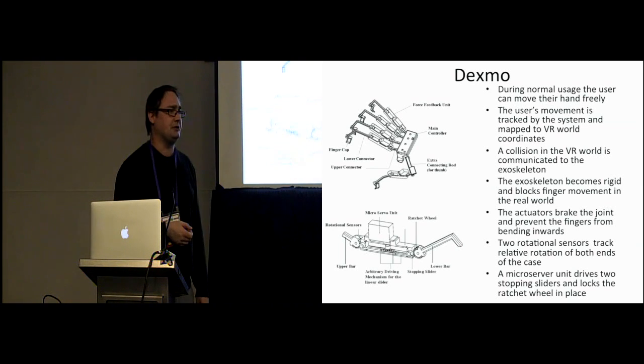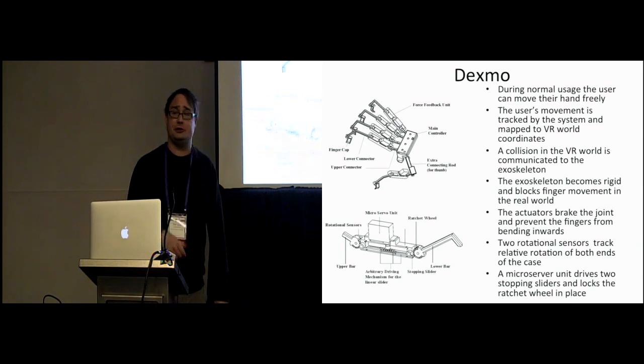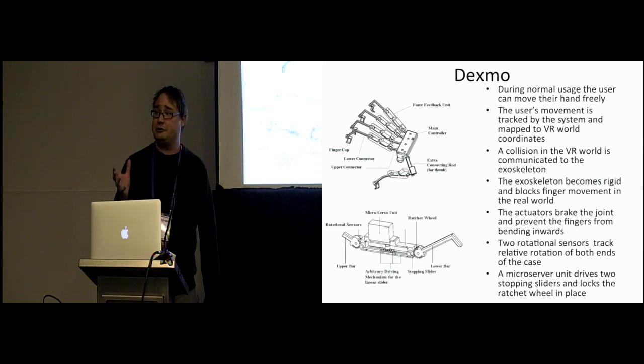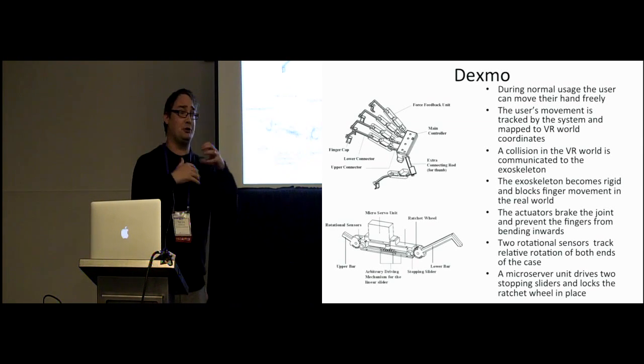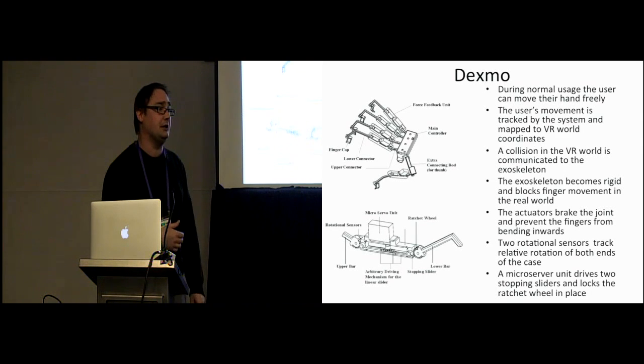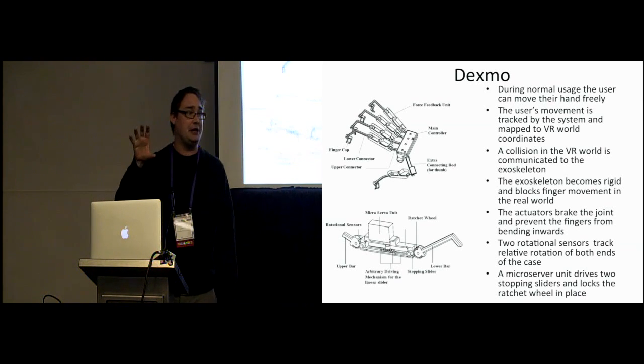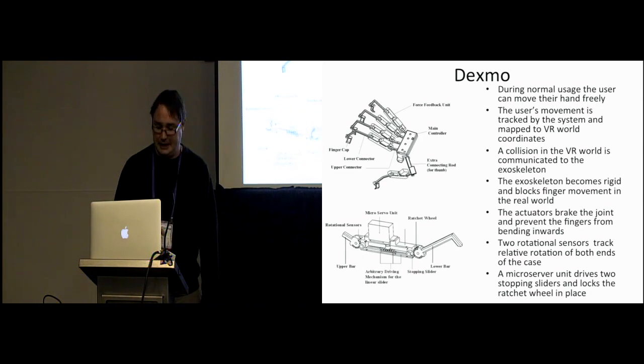Which actually, if you think about it, makes a lot of sense, because most objects we touch are actually rigid in the physical world, and this provides a very rigid experience, because it actually blocks the joints. It's sort of a breaking approach, right? We basically break the mechanical exoskeleton at the appropriate point.